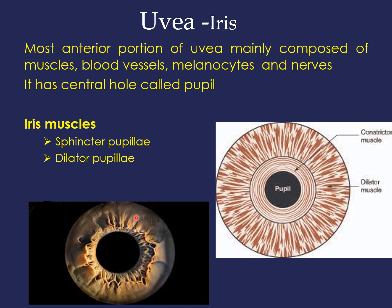The iris is the most anterior part of the uveal tract. It consists of muscles, nerves, blood vessels, and pigmented cells called melanocytes, which give color to our eyes. The iris has a central hole called the pupil, whose size is regulated by two muscles: the sphincter pupillae and the dilator pupillae. The sphincter pupillae constricts the pupil and is supplied by parasympathetic nerves via short ciliary nerves from the third cranial nerve.